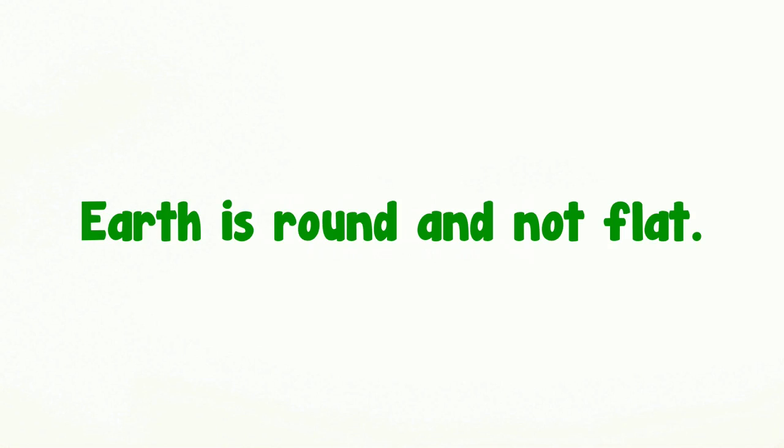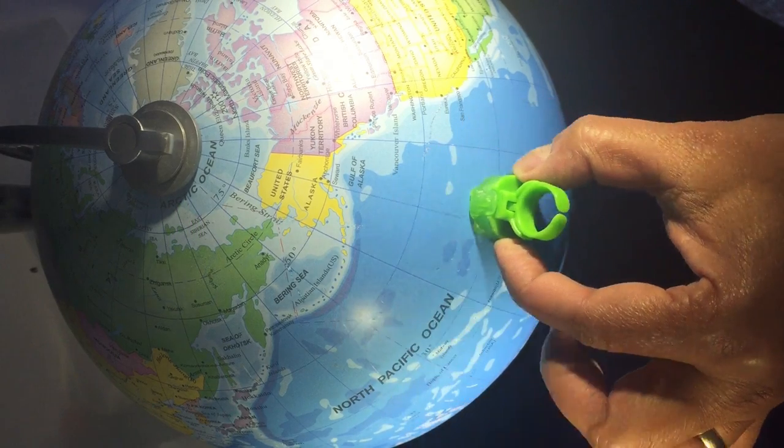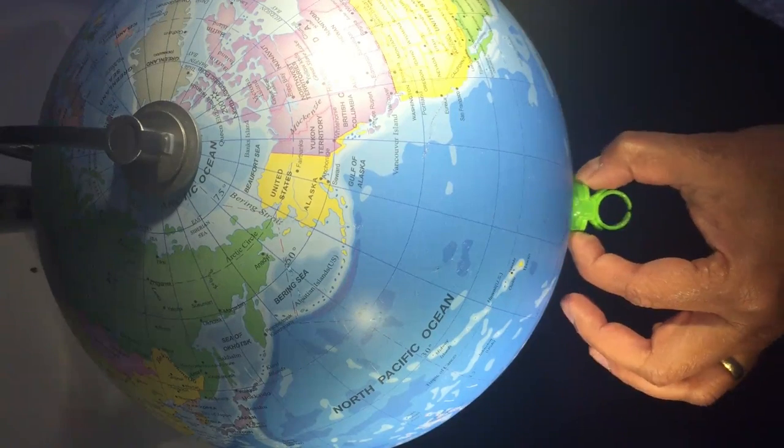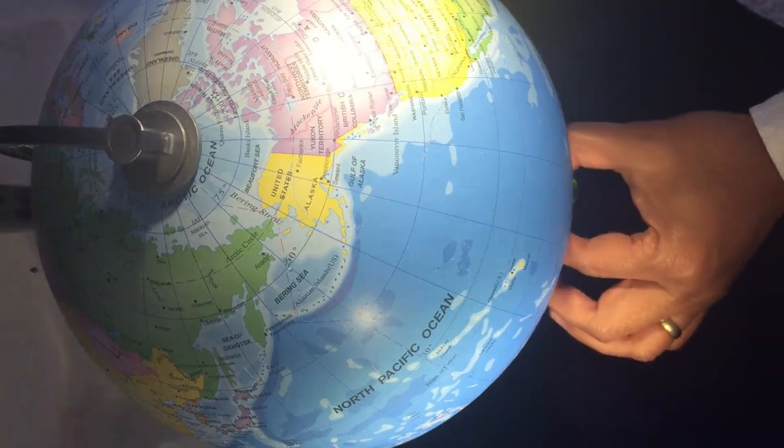Consider the statement, Earth is round and not flat, because sailing ships gradually disappear from the horizon, sinking lower and lower, and they don't simply drop down at the horizon, which they would if the Earth were flat.